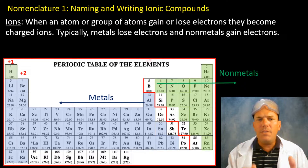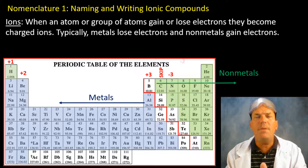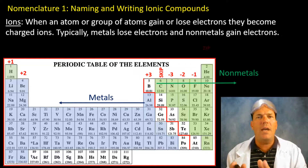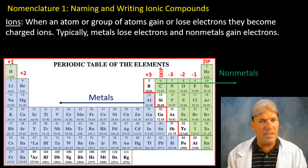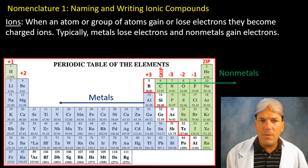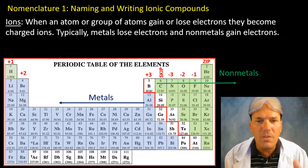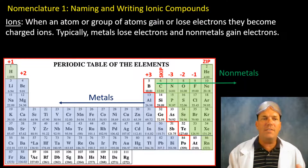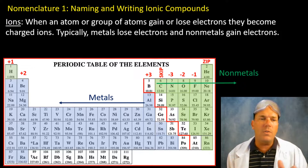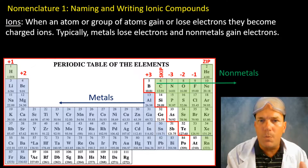Plus one, plus two, plus three, and skip — minus three, minus two, minus one, and zip. I want you to write that on your periodic table if you haven't already done so. These are the charges that correspond to these groups.